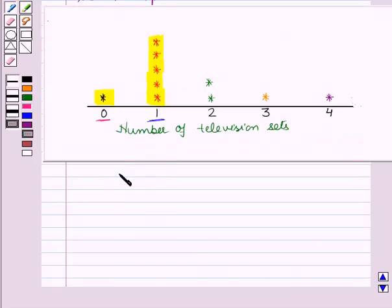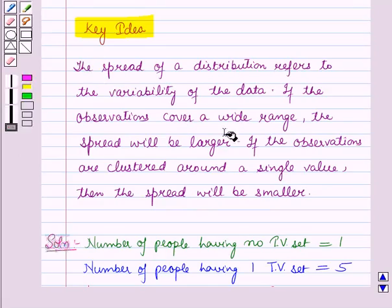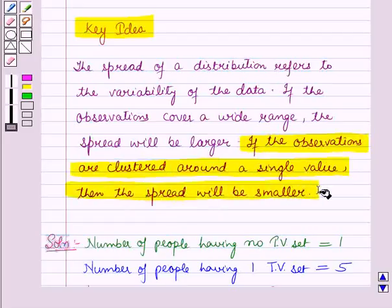Now clearly this distribution tells us that the maximum number of persons have one TV set. Most of the observations are concentrated at one, so the spread is not wide. As we know from the key idea, if the observations are clustered around a single value, then the spread will be smaller.